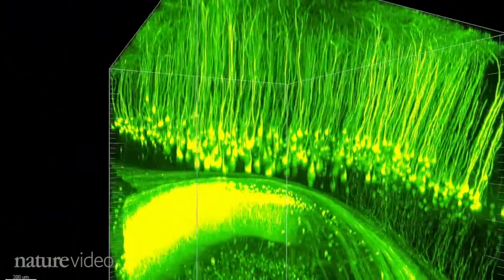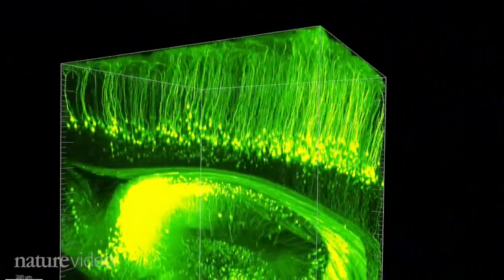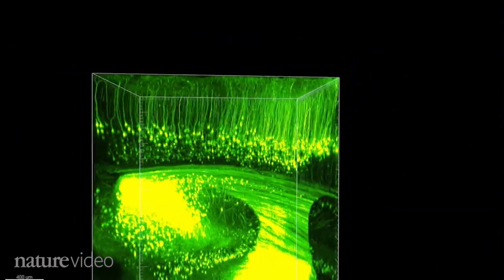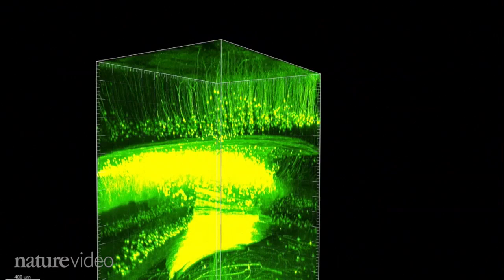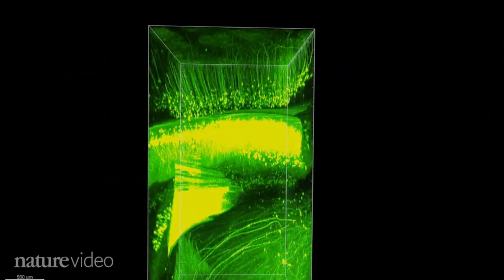This is the work of Carl Deisseroth and his team at Stanford University. By making the entire brain transparent, they were able to image it using a light microscope. They call the new technique clarity.